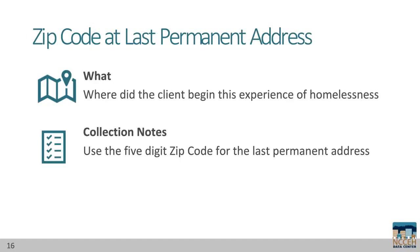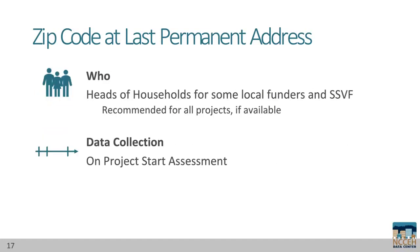Zip code at last permanent address asks: where did the client begin this experience of homelessness? Collect the five-digit zip code if available. Last permanent address refers to where the client was last housed in a non-temporary location. Zip code of last permanent address must be collected for heads of households for SSVF projects and some local funding sources on the project start assessment. It is also recommended for all types of projects, if available, for better analysis.